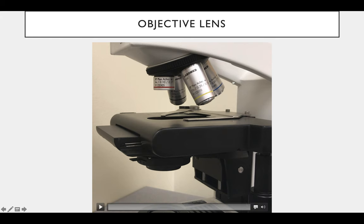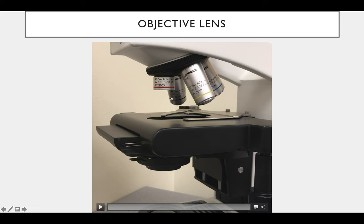The blue one magnifies it 40 times, times the ten from the ocular lens, so that's 400 times magnification you get there. And this one in the back magnifies an object 100 times in addition to the ten from the ocular lens — so you'd get 1,000 times magnification with that.